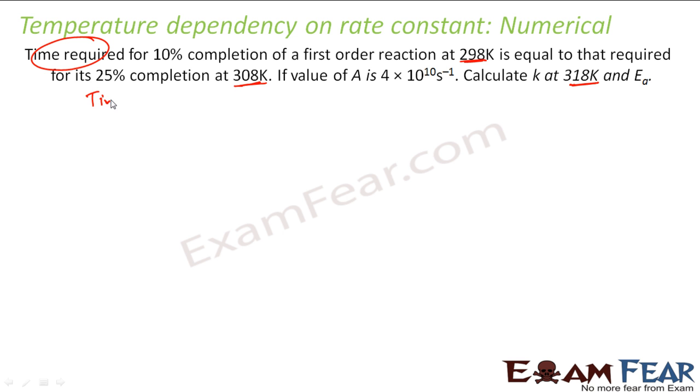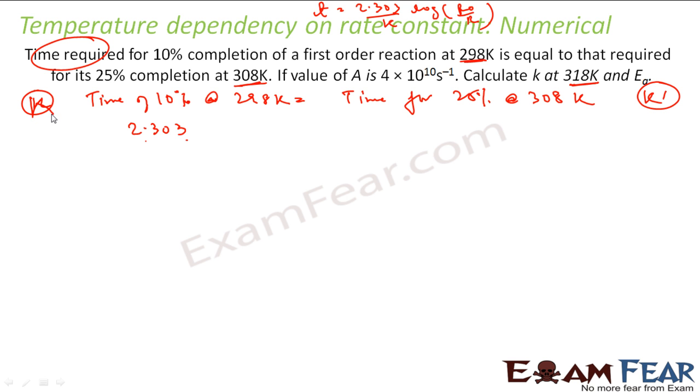The catch here is time required for 10% completion at 298K equals time for 25% completion at 308K. This is the first clue we have. Let's find this first. In both cases we will have different K. In this case if it is K, it will be K dash. The rate constant will be different.